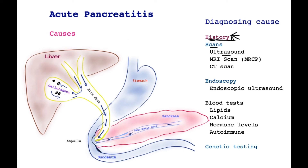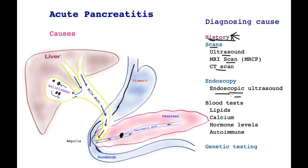If an ultrasound scan does not show gallstones and a cause is not obvious, then an MRI scan of the abdomen may be performed. This will not only pick up hitherto unseen gallstones, but may also show structural pancreas anomalies such as a tumor, or abnormalities of the pancreatic duct which may predispose to recurrent acute pancreatitis. A CT scan will do the same, but an MRI scan in this situation is preferable. An endoscopic ultrasound is an examination of the pancreas with an endoscope with an ultrasound scanner attached to it, which goes down into the gullet and stomach.